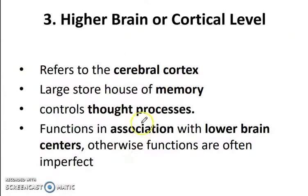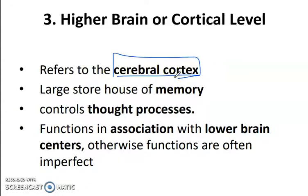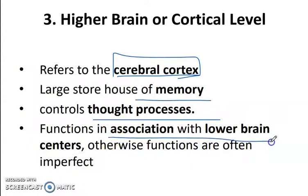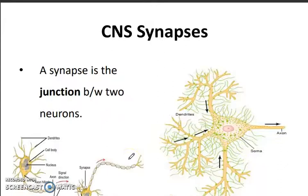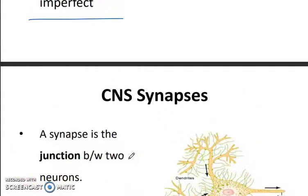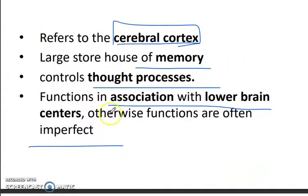The higher brain refers to the cerebral cortex, which is the most superior and senior level. It is the large storehouse of memory, controls thought processes, and functions in association with lower brain centers. We will cover synapses in the next part. Thank you very much for listening — please like, share, and subscribe. Goodbye.